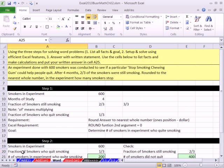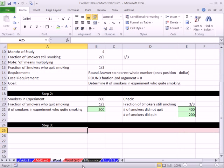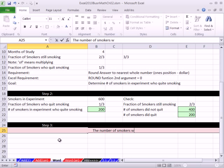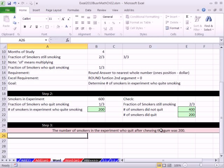Now we can write our answer, cell A25. It's always going to tell you which cell to write your answer. As soon as you start typing in A25, it's centered across this selection here. The number of smokers in the experiment who quit after chewing the gum was 200.